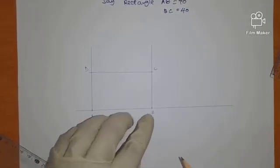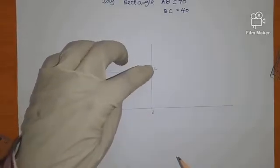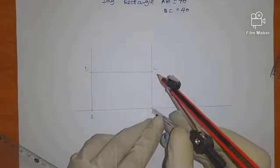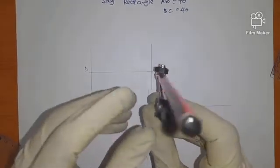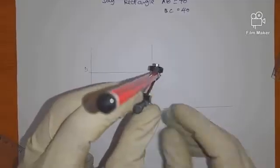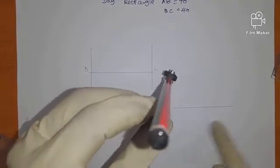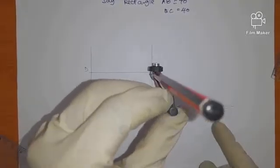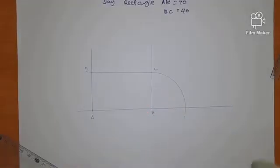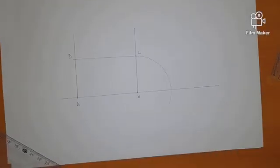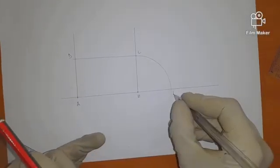Now, the procedure to convert this area ABCD into a square: we first take B as the center and BC as the radius. Then we make an arc that meets AB produced, and we call this new point E.